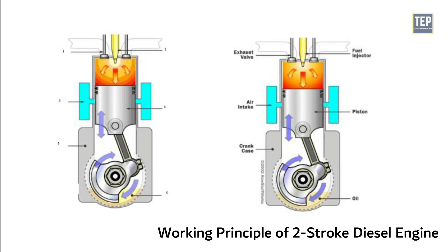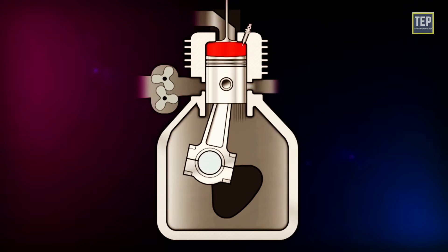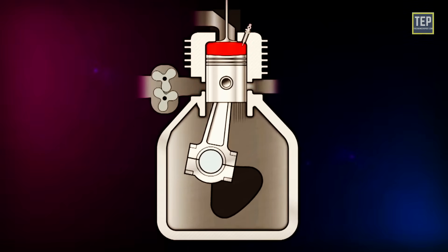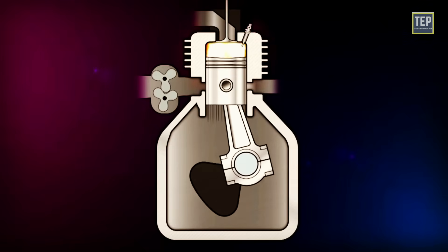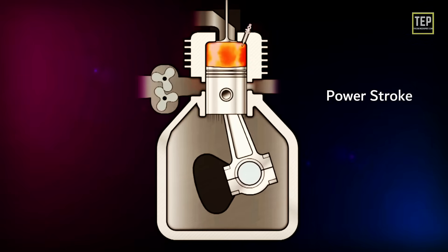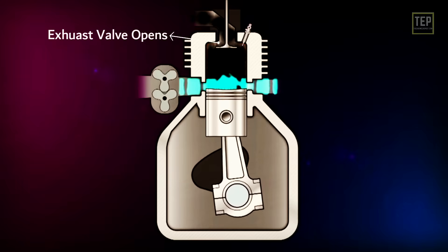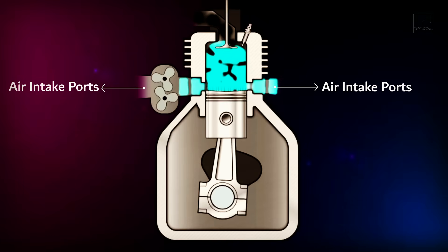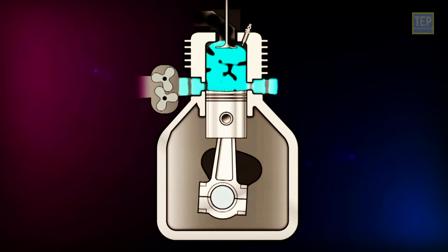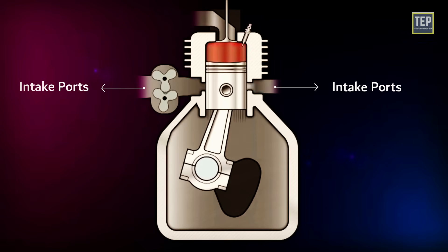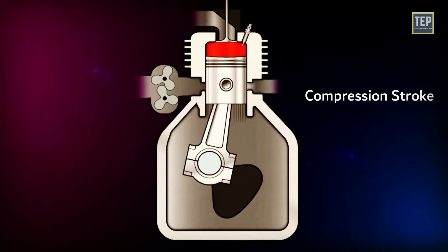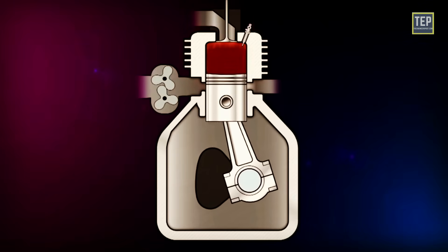Two-stroke diesel engine: it works similarly to the two-stroke petrol engine, but injects diesel at the end of the compression stroke. When the piston is at the top of its travel, the cylinder contains highly compressed air. Diesel fuel is sprayed in by the injector and immediately ignites due to heat and pressure. The combustion drives the piston downward in the power stroke. As the piston nears the bottom, exhaust valves open and gases rush out. The piston then uncovers the air intake ports, pressurized air fills the cylinder flushing out remaining exhaust gases. The exhaust valves close, the piston travels back up covering the intake ports and compressing the fresh air charge, and the cycle repeats.